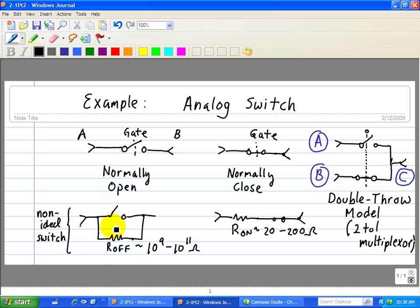So although in a non-ideal case, the off resistance is very high, 10 to the 9 to 10 to the 11 ohms.